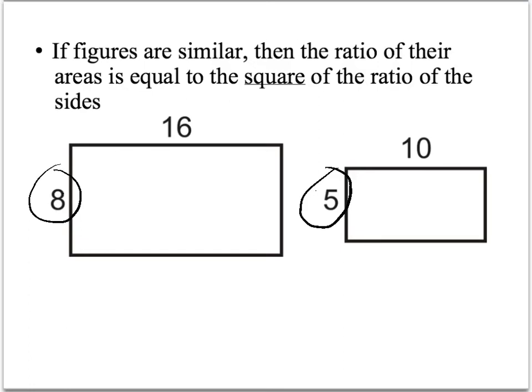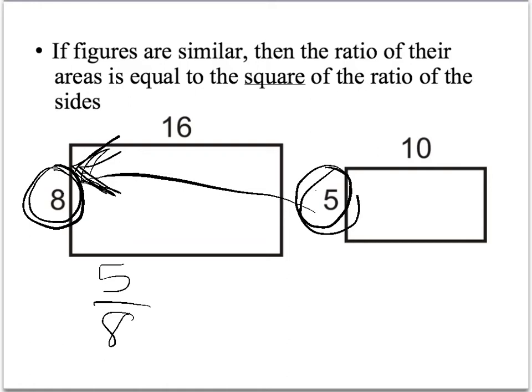Well, my ratio would be 5 over 8. This 5 over this 8. By the way, you could write it 8 over 5. It would be the same thing in this case, because you're talking about the ratio of one side of a rectangle to another side of a rectangle. It's equal to the square of the ratio of the sides. Well, this is what we have to do. We have to square this whole thing to look at the ratio here.